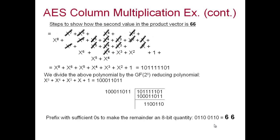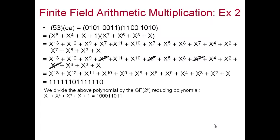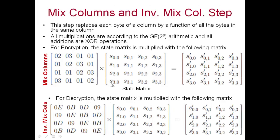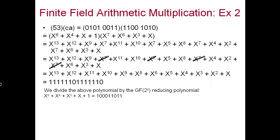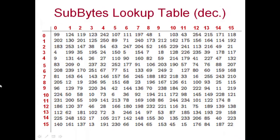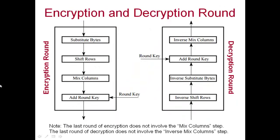These are the three main sub-steps of AES — substitute bytes, shift rows, and mix columns — with the last step being the XOR operation with the round key. The round key is 128 bits, or 4 words, for each round.